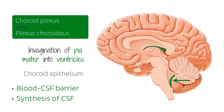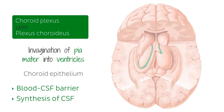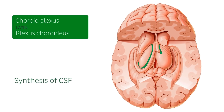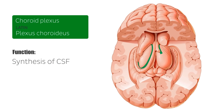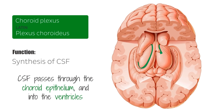In this image we can see the choroid plexus of the lateral ventricle in green. The choroid plexus is the site of continuous synthesis of CSF in all four ventricles, though it occurs primarily in the lateral ventricles. The fluid is formed by diffusion and active transfer from the arterial blood supply of the pia mater, which is then transferred through the choroid epithelium and into the ventricles.